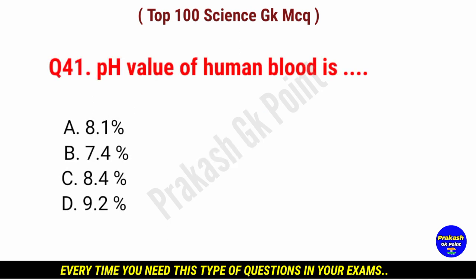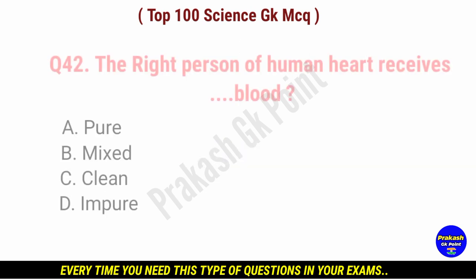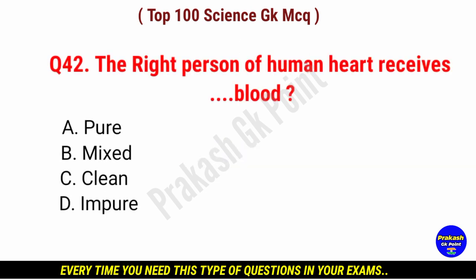pH value of human blood is dash. Answer: option B, 7.4.